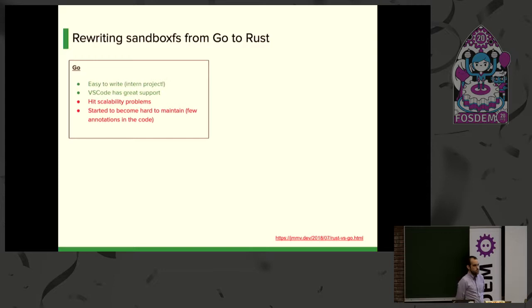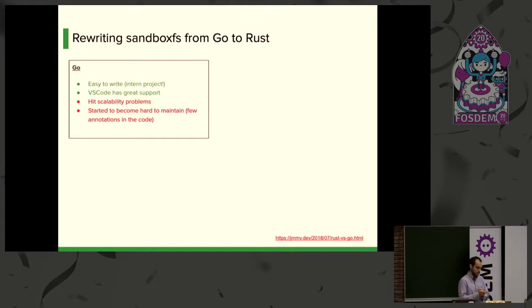My critique of Go is that there is no accepted way of adding annotations like assertions or thread annotations in your source code. So things had lots of comments explaining how the code was supposed to behave, but the compiler couldn't enforce anything. At some point I just wanted to learn Rust, and since this is my side project, I decided to learn Rust by rewriting the whole thing.